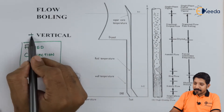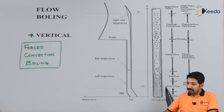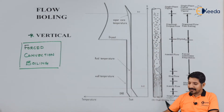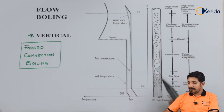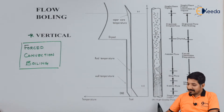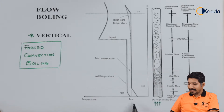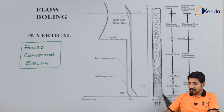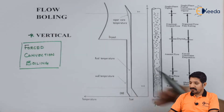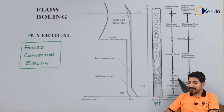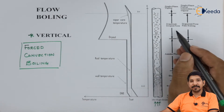Now let us consider the vertical scenario. Let us say there is a tube and heat is given to the wall of the tube. A fluid is passed through the tube at some temperature T saturated. In flow boiling we have four regions: the bubbly region, the slug region, the annular region, and finally the mist region.